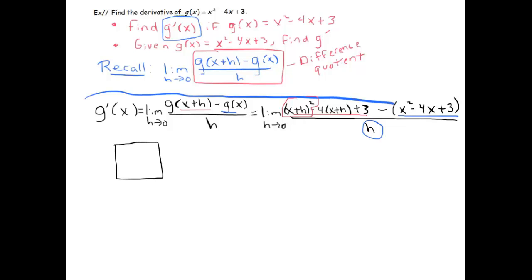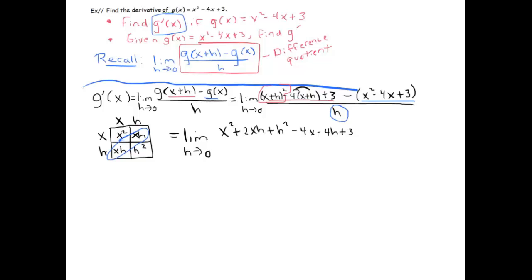The first thing you've got to realize is that we need to expand (x+h)² out. This is what I mean by it being a little bit more algebra than anything else. (x+h)(x+h) gives you x² + 2xh + h². This equals the limit as h goes to 0 of x² + 2xh + h² - 4x - 4h + 3. Then I distribute this negative to those three pieces, so it becomes -x² + 4x - 3, all divided by h.